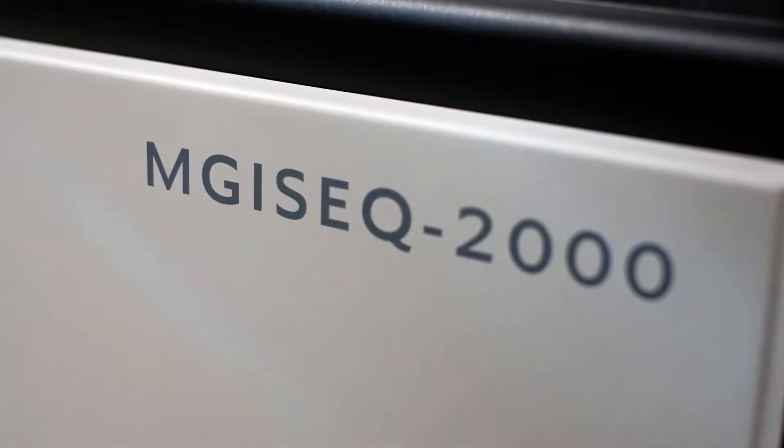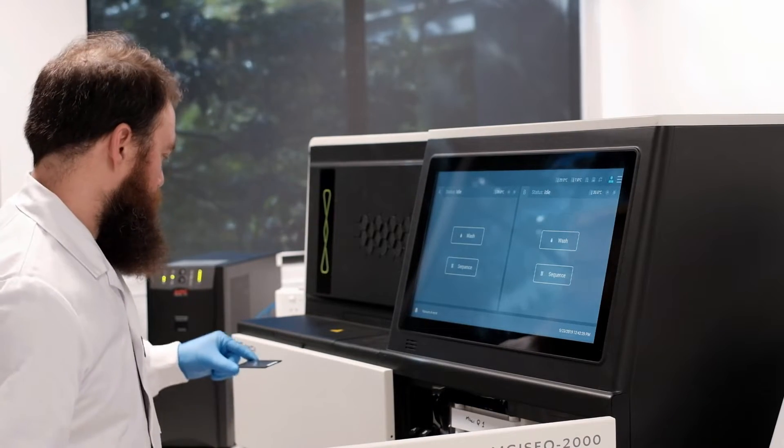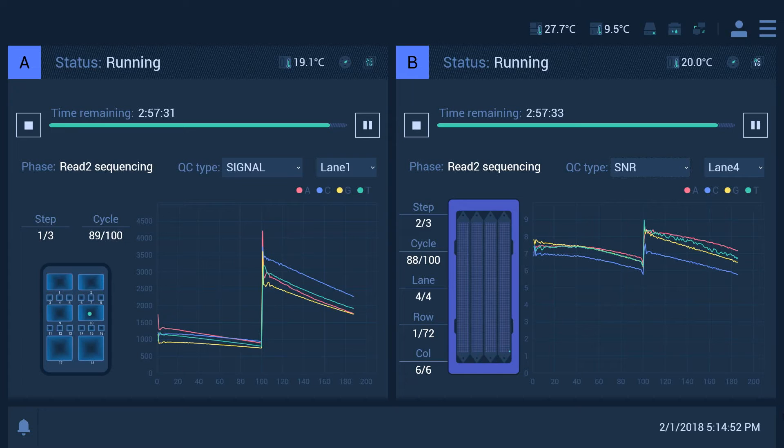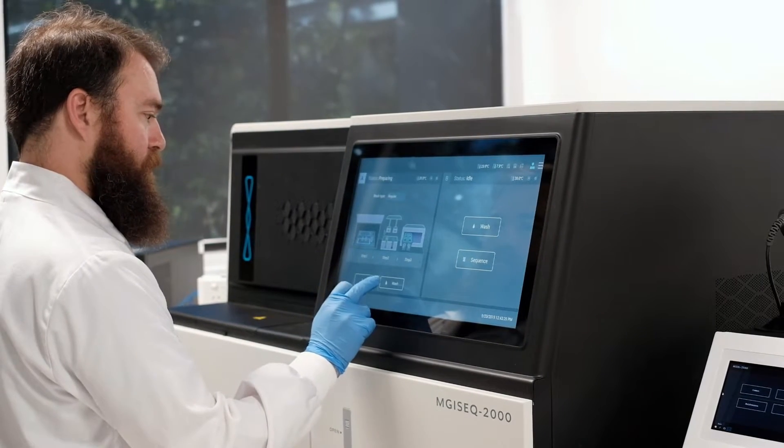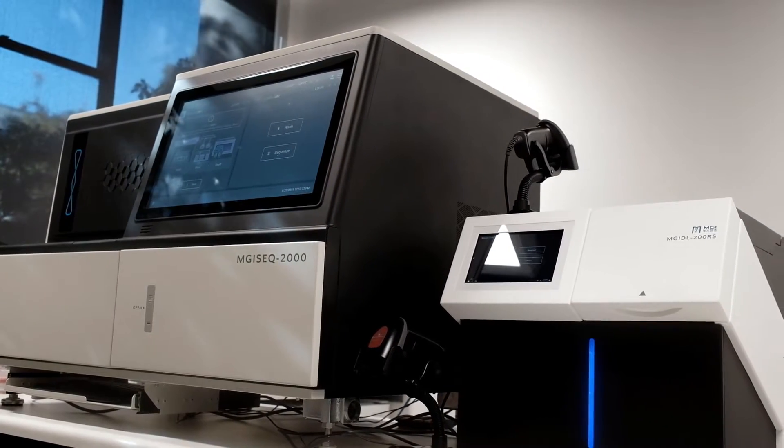So the data we're seeing so far off the instrument is an improvement over the current sequencing technology that we have in that the read 2 sequencing data, the tail ends of the read 2 sequencing data is much higher quality than we're seeing from our current instrumentation and that's particularly important for applications where we need to stitch our reads together to make virtual longer reads.